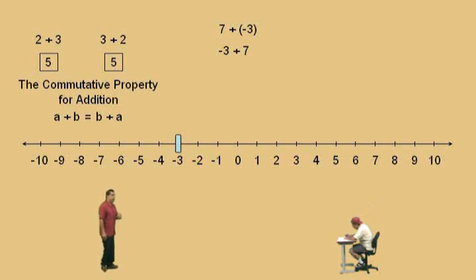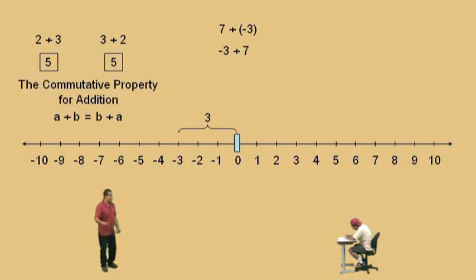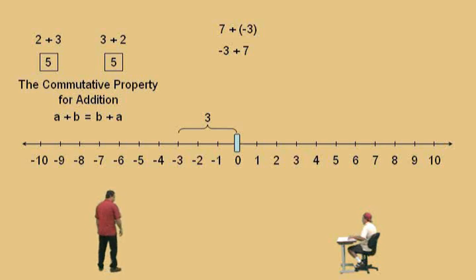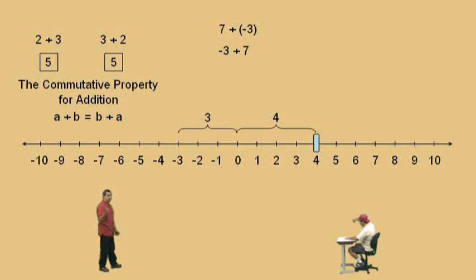Now, here we go. We're going to work in steps. We first go to zero — we move three times and then take a break. Now, how many more do we have to go, Charlie? Four more. So that puts us at four. Negative three plus seven is four.